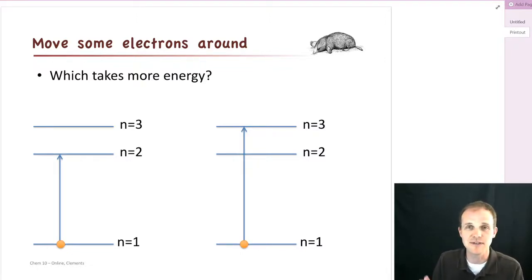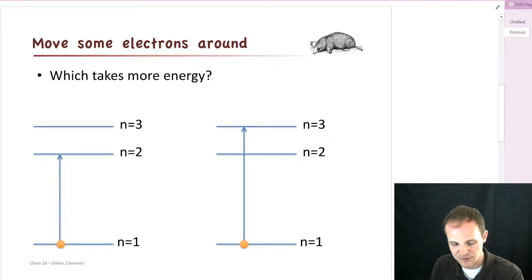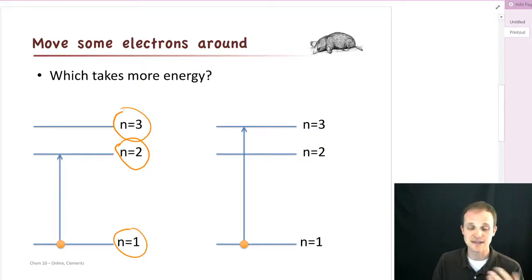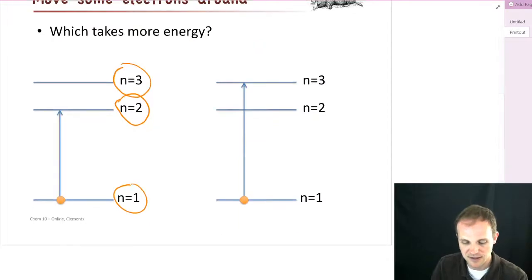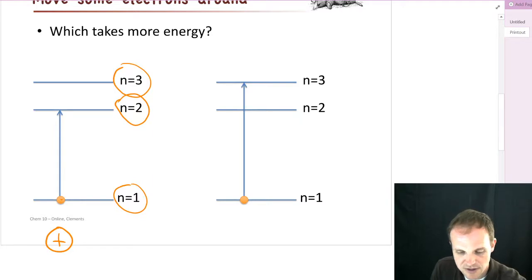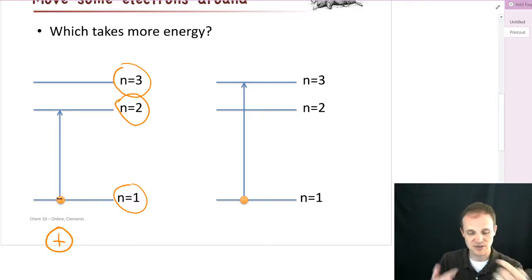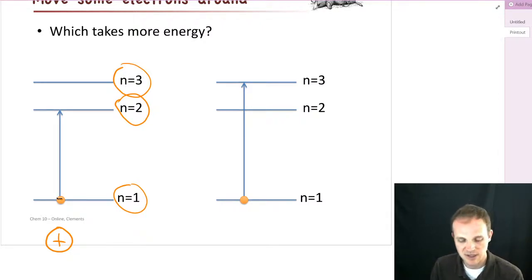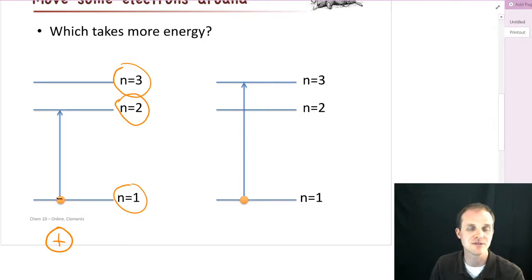What we're going to talk about next briefly is what happens when electrons move around. We had these different levels — n equals 1, n equals 2, n equals 3 — and they had different energies. Because down at the bottom we have our positively charged nucleus, and up here we have negatively charged electrons. They're attracted to each other, which is why we filled up n equals 1 before n equals 2, before n equals 3.